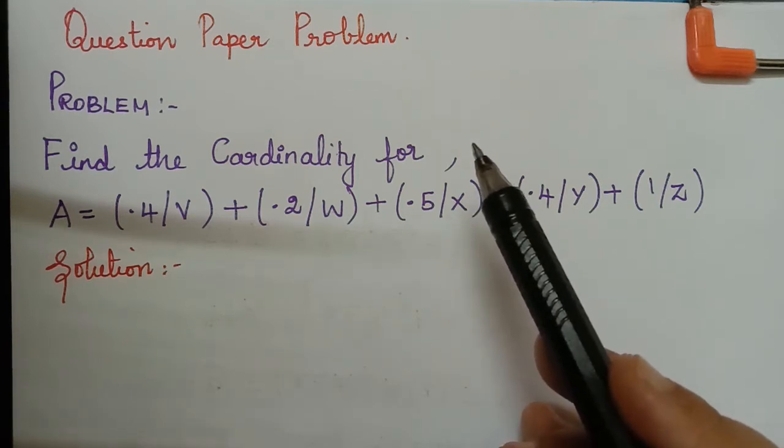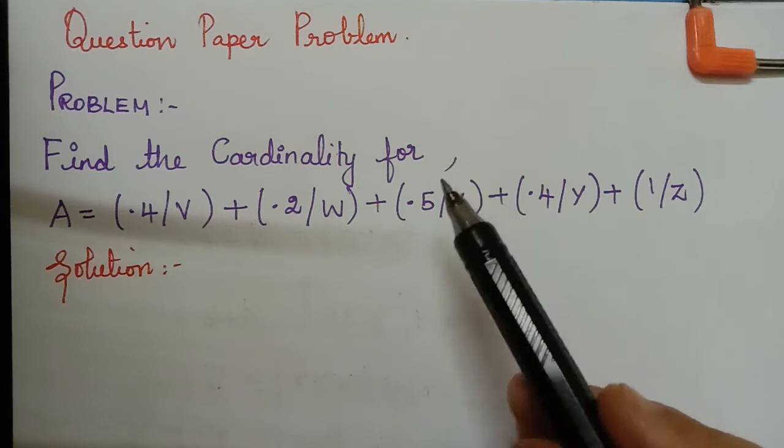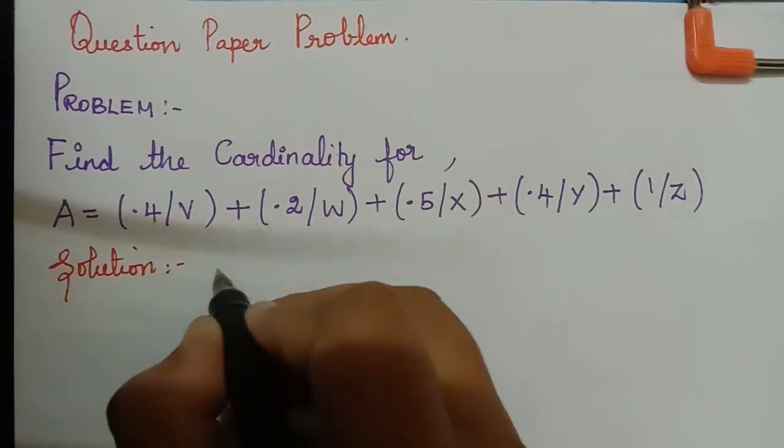The relative cardinality can be found only if the universal set capital X is given. So now here because we don't have the universal set we will be solving only for scalar cardinality and fuzzy cardinality. So now let us see that now.